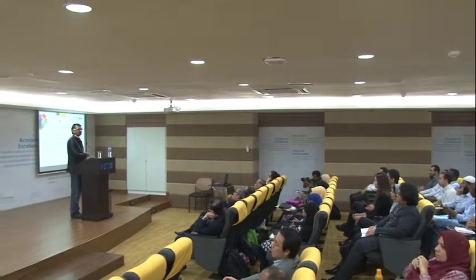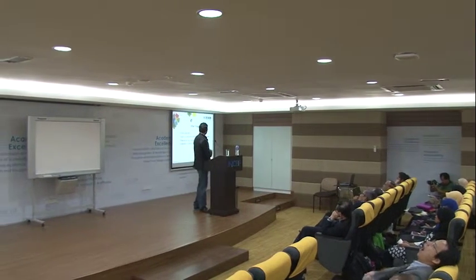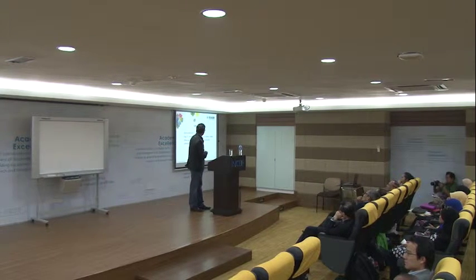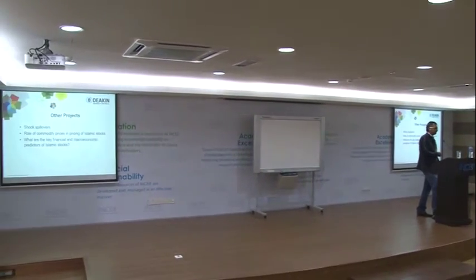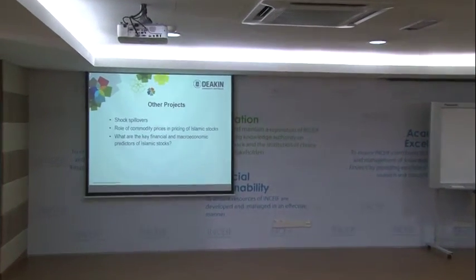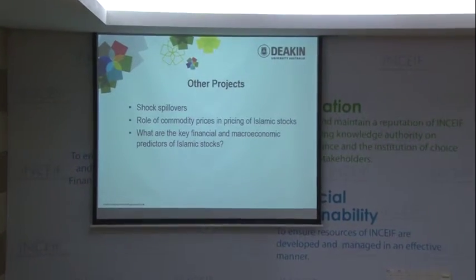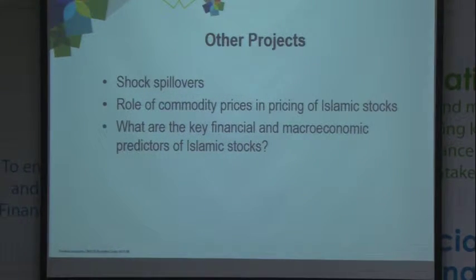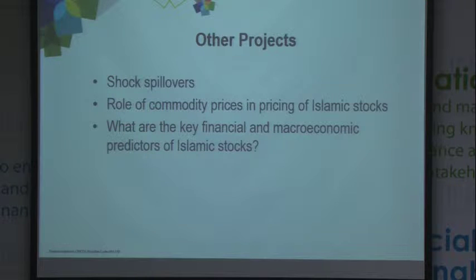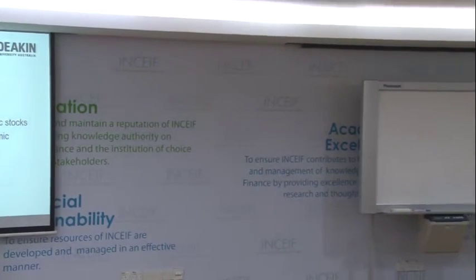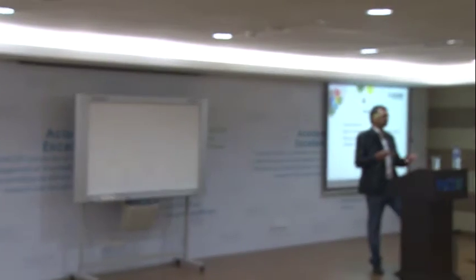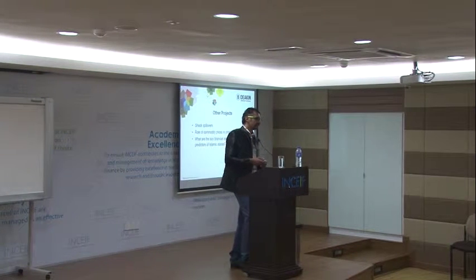These are our existing projects — things we have already done. We are also doing three more things at present. The first is shock spillover. The idea is: if there is a shock that hits Islamic stocks, do they spill over to non-Islamic stocks? If they do, what is the trajectory — how does that shock affect things over what time period? And vice versa, if there is a shock to non-Islamic stocks, what is the speed of the spillover?